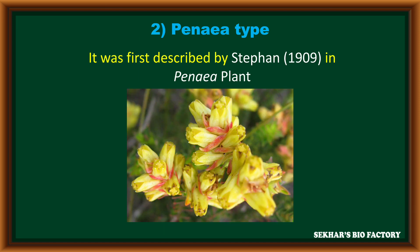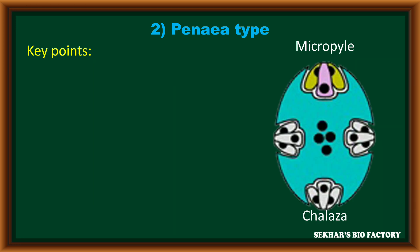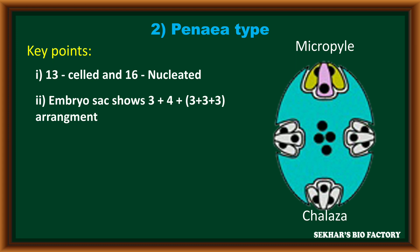Coming to the second type, that is the Penaea type. The Penaea type of embryo sac was first described by Stephens in 1909 in one of the plants, the Penaea plant. In the structure of this embryo sac, it shows a 13-celled and 16-nucleated structure. It shows a three plus four plus three plus three plus three arrangement.